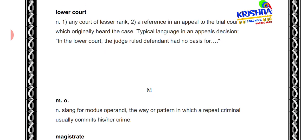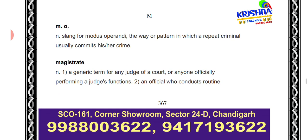Next is 'lower court.' Lower court means a court whose ranking is lower — below a higher court. You first file your case in the lower court. If you are not satisfied with the decision, then you go to the higher court. Next is 'M.O.' — this abbreviation is used for 'modus operandi.'